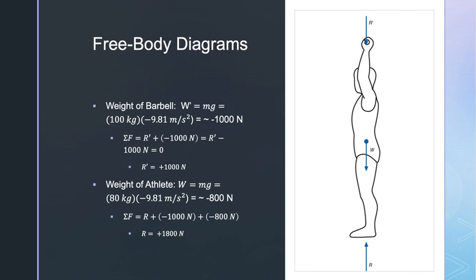Now we can solve for the reaction force from the floor. The weightlifter's mass is 80 kilograms. Using the equilibrium equation: ΣF = R + (−1,000 N) + (−800 N) = 0, so R = 1,800 Newtons. The reaction force from the floor is 1,800 Newtons acting upward on the weightlifter's feet.